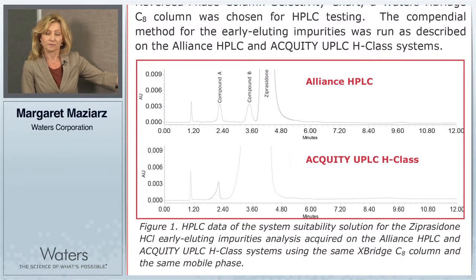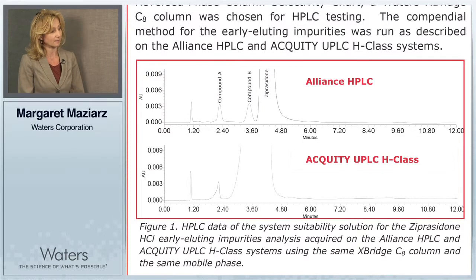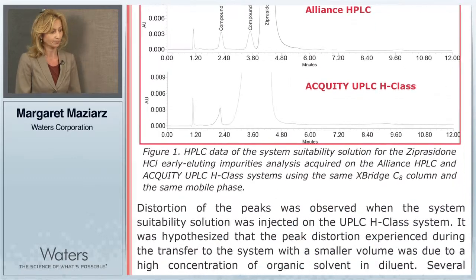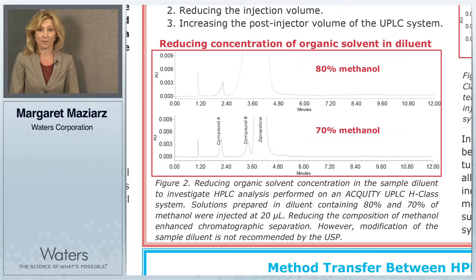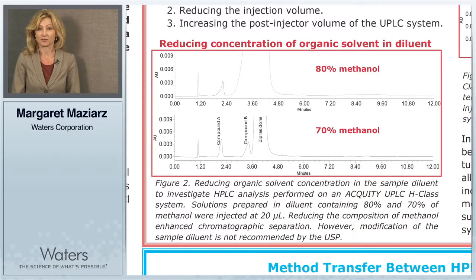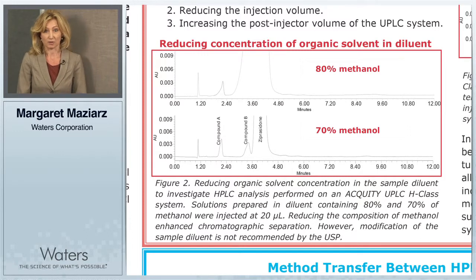The testing included reducing the concentration of organic solvent in the sample diluent, reducing the injection volume on the system, and increasing the post-injector volume of the Acquity UPLC H-Class system. As shown in figure two, we reduced the composition of methanol in the sample diluent from 80 to 70%. We found that decreasing the concentration of methanol in the sample diluent drastically improved the separation and resolution between the peaks. However, modification to the sample diluent is not recommended by the USP.